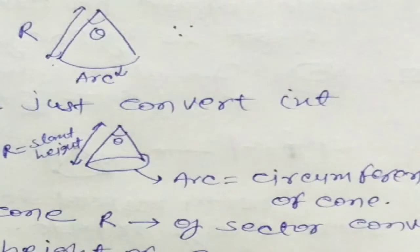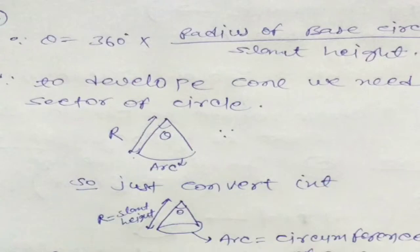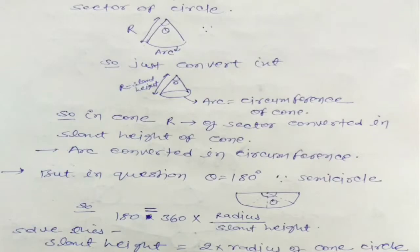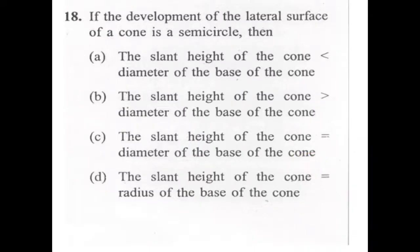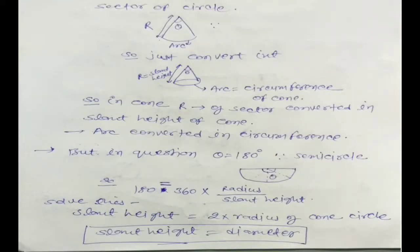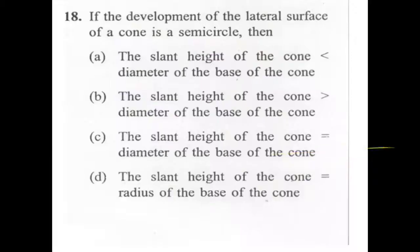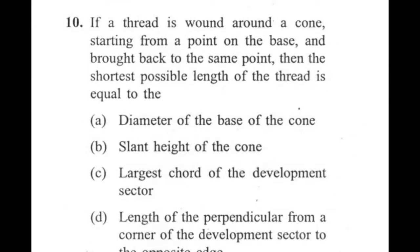These two relationships give the formula: theta = 360 × R / slant height. When the lateral surface is a semicircle, theta = 180. Substituting: 180 = 360 × radius / slant height. Solving: slant height = 2 × radius = diameter. So option C is the right answer.